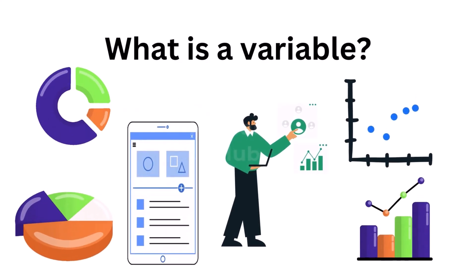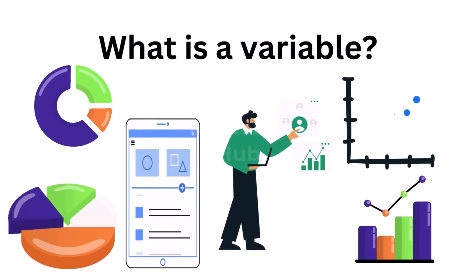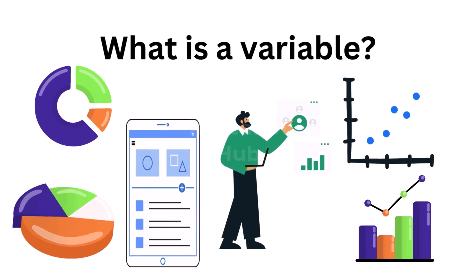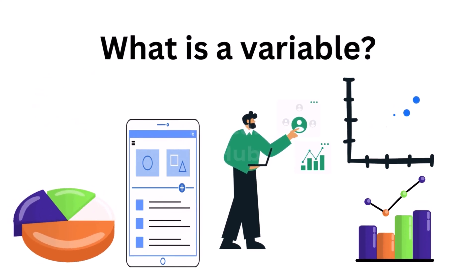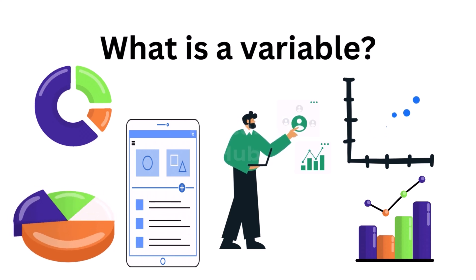By categorizing variables into distinct groups based on their roles in research, their types of data, and their relationships with other variables, researchers can more effectively structure their studies and achieve more accurate conclusions. Let's begin.